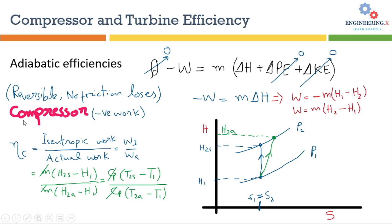The adiabatic efficiency of a compressor is defined as the ratio of isentropic work to actual work. Isentropic work is also called ideal work because it is calculated at constant entropy. I am using the notation Wi for isentropic work and Wa for actual work. To introduce the values of isentropic and actual work, I am going to use the Mollier diagram — a graph of enthalpy versus entropy.